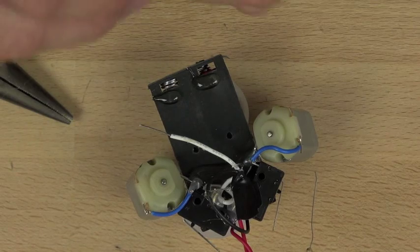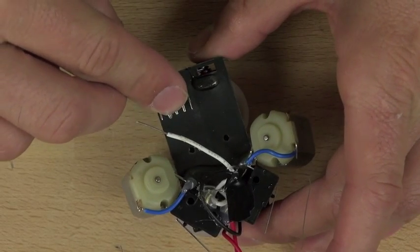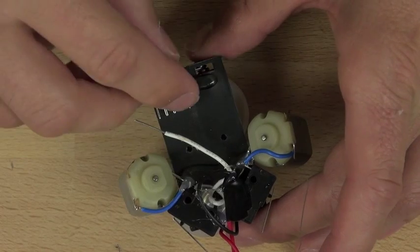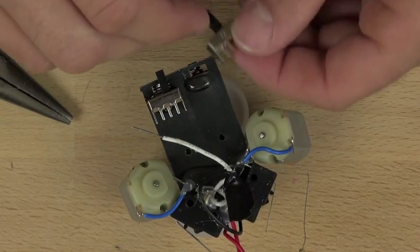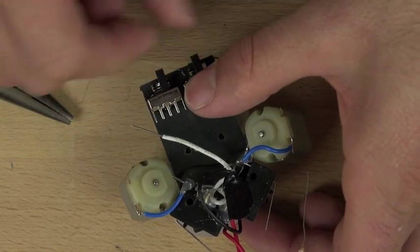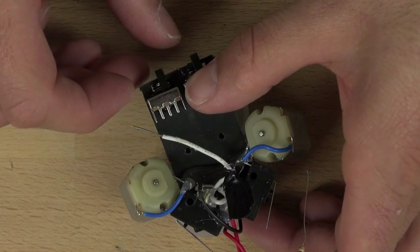You want to make sure that the hot glue does not interfere with the sliding of the switch or with the contacts on the back. So when you push the switch down, just make sure you don't get hot glue in the switch, otherwise it won't work.